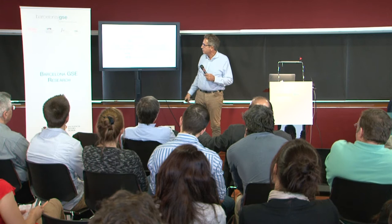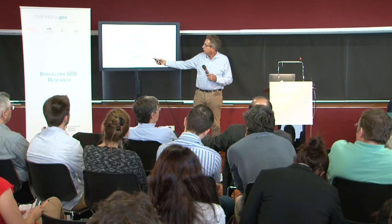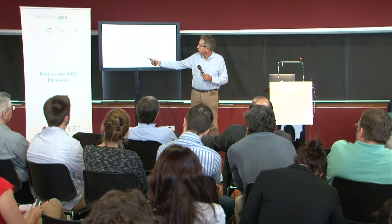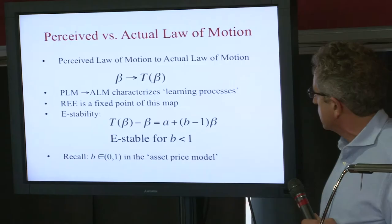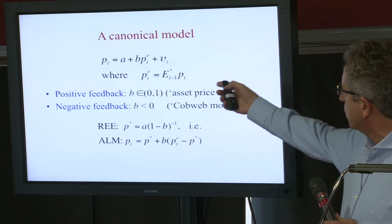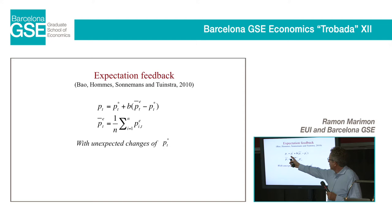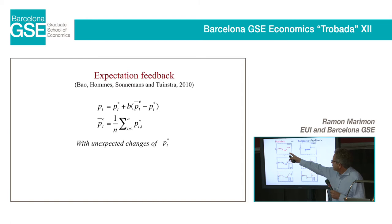Starting from some perceived law of motion and moving toward the actual law of motion, learning stability only requires B to be less than one in absolute value — true for both the asset pricing model and the cobweb model. But they have different properties: one is positive feedback, the other is negative feedback. In an experiment changing the fundamental price unexpectedly, with positive feedback learning eventually occurs but takes a long time, because everyone moves in the same direction.